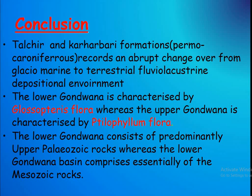Conclusion. The Talchir and Karharbari formations of Permo-Carboniferous age record an abrupt change from glacial–marine to terrestrial fluvial and lacustrine depositional environments. The Lower Gondwana is characterized by Glossopteris flora, whereas the Upper Gondwana is characterized by Trilopilum flora. The Lower Gondwana consists of predominantly Upper Paleozoic groups, whereas the Lower Gondwana basin comprises elements of the Mesozoic groups.